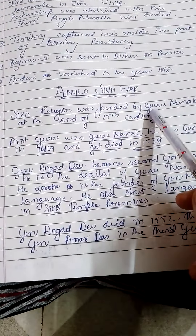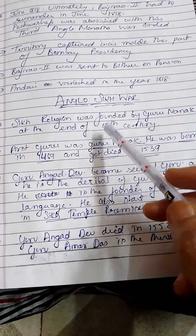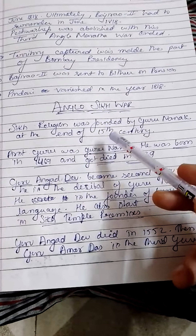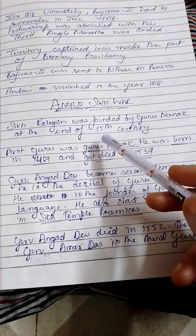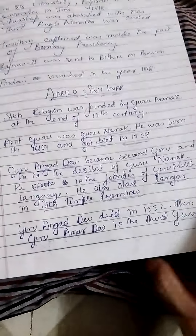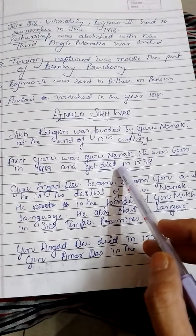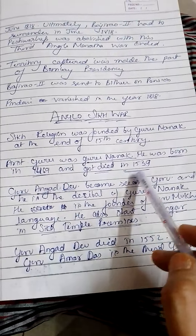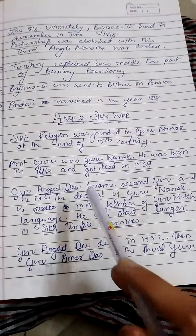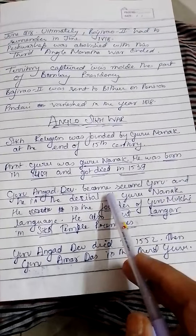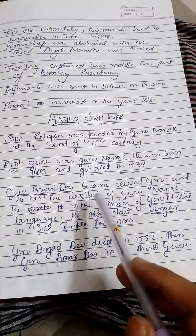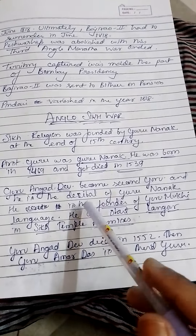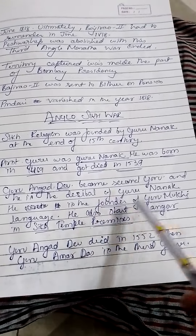This Sikh War is mainly about Sikh religion. Before we know something about Sikh religion: Guru Nanak was the founder in the end of the 15th century. The first Guru Nanak Ji was born in 1469 and his death was in 1539. The next Guru was Angad Dev Ji, the second Guru, also called Guru Nanak's disciple. They developed the Gurmukhi language.